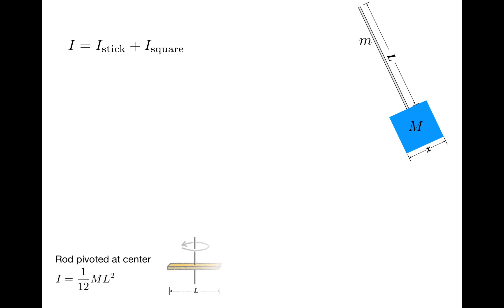You can go back to the table and find the rotational inertias of the stick and the square plate about their centers of mass. And since neither the stick nor the square is rotated about its center of mass, we'll have to apply the parallel axis theorem twice.